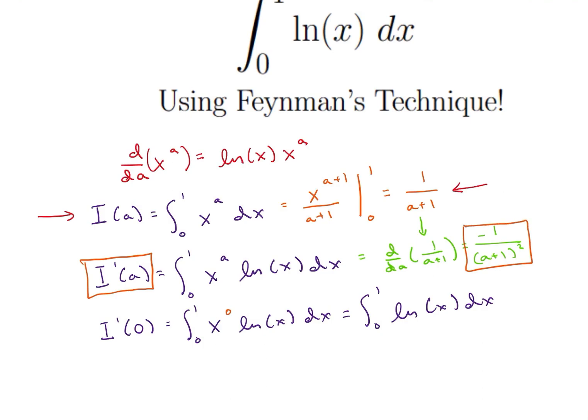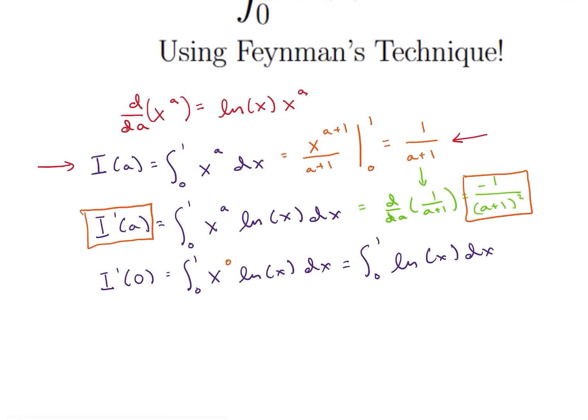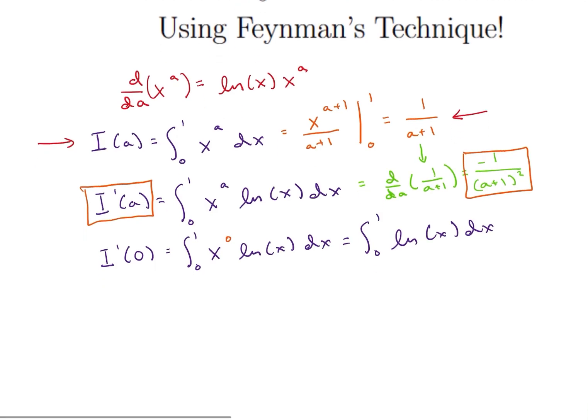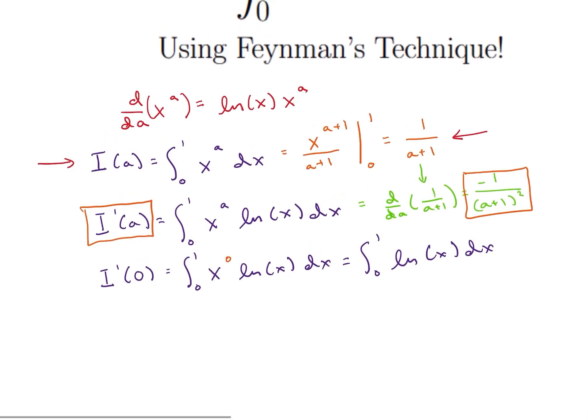So i prime of a is negative 1 over a plus 1 squared. And we already said that our original expression was i prime of 0. So all we have to do now is say that i prime of 0, let's plug in 0 for a, and we get negative 1 divided by 0 plus 1 squared, which just ends up being negative 1.